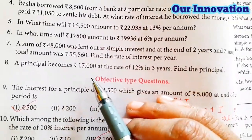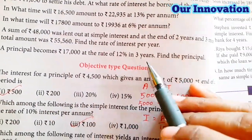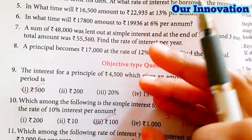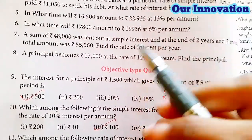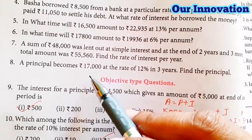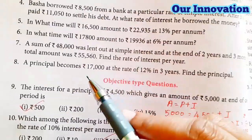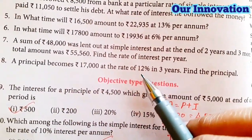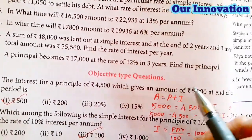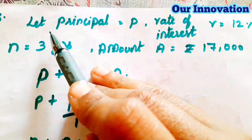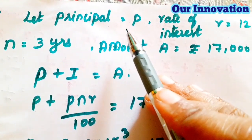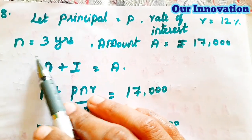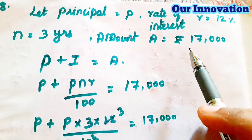Problem 8: A principle becomes ₹17,000 at the rate of 12% in 3 years. Find the principle. So the particular principal grows to ₹17,000 at the end of 3 years at 12% rate. Let principle = P, r = 12%, n = 3 years, and amount A = ₹17,000.